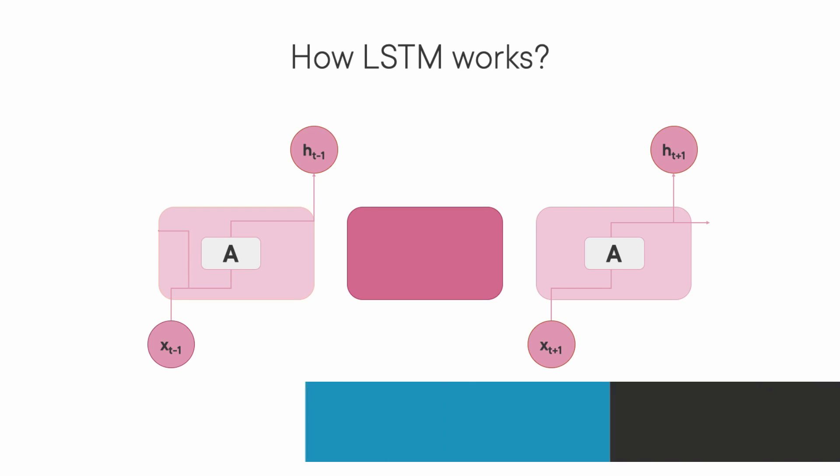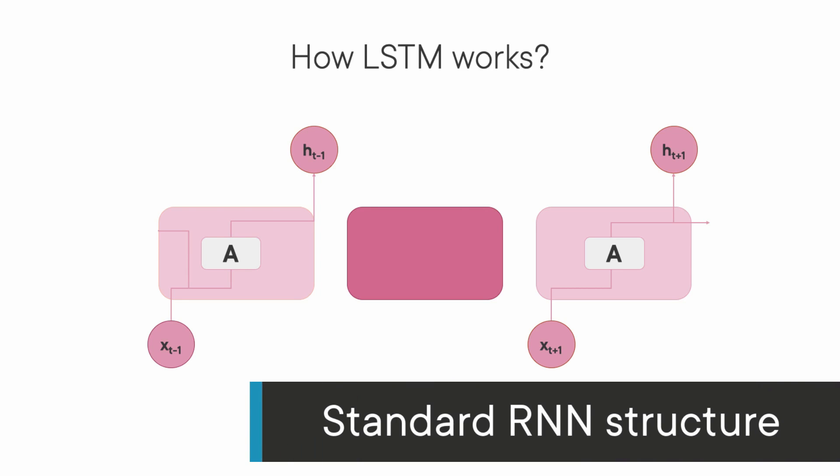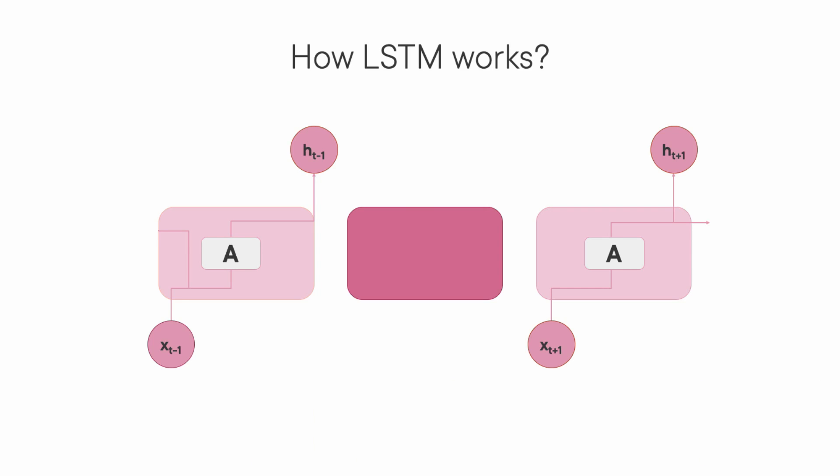Here's how a standard recurrent neural network can be represented. We pass the input xt along with the output from the previous node, which is ht-1, to this central node. Then we apply the tanh activation function and generate the output which is ht.